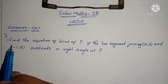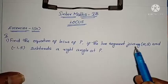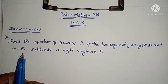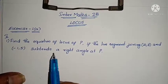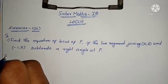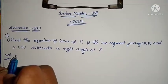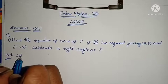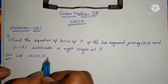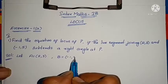Question: find the equation of the locus of P, if the line segment joining (2,3) and (-1,5) subtends a right angle at P. Solution: let A = (2,3) and B = (-1,5).